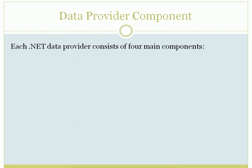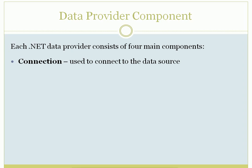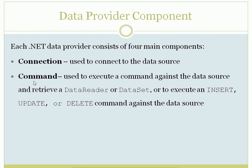A Data Provider has four main components. The first is Connection — it is a class used to connect to the data source or database. The second is Command — it is used to execute queries against your data source or database, and to retrieve results using a DataReader or DataSet, or to execute insert, update, or delete commands.